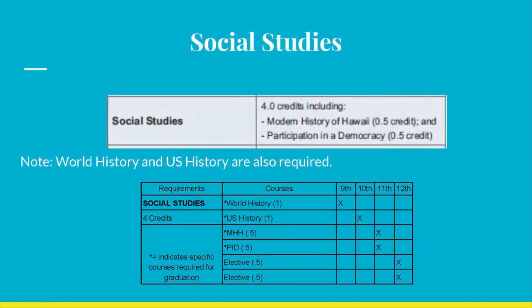Social Studies also requires 4 credits, with specific credits earned in World History — 1 credit, U.S. History — 1 credit, Modern History of Hawaii — 1 credit, and Participation in Democracy — half a credit. Failure to earn a Social Studies credit in any one year will result in taking two Social Studies courses in the next year or so.